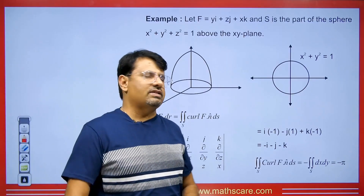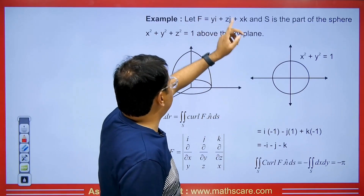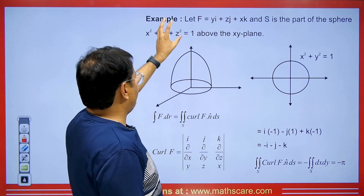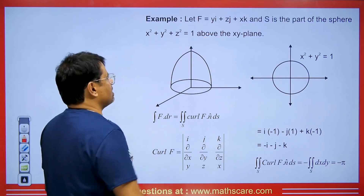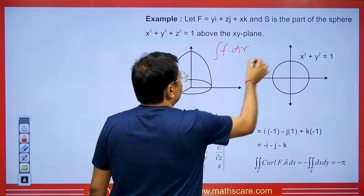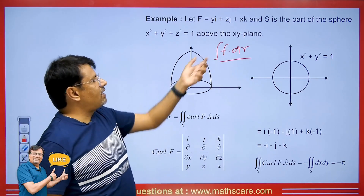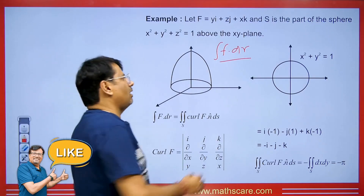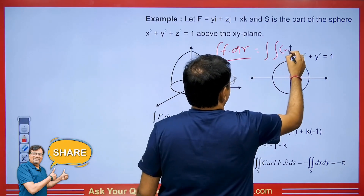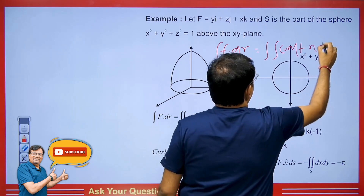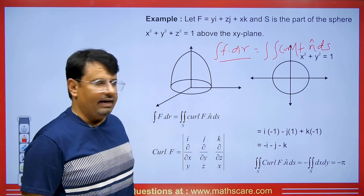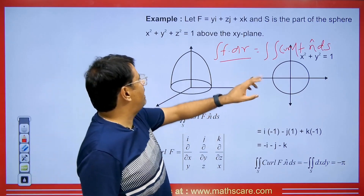Let's look at the question. Here we have f = yi + zj + xk, and s is the part of the sphere above the xy plane. You are being asked for the value of the line integral f dot dr.